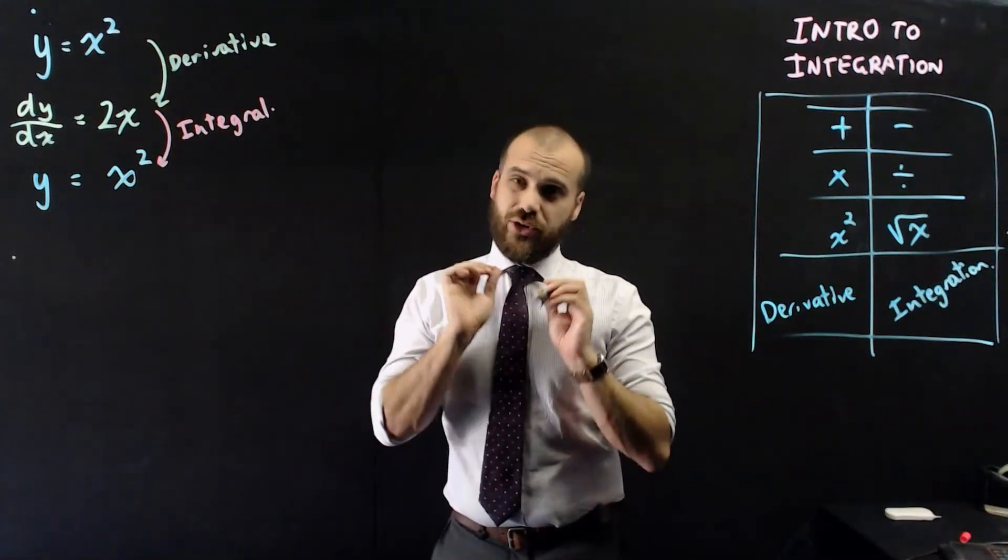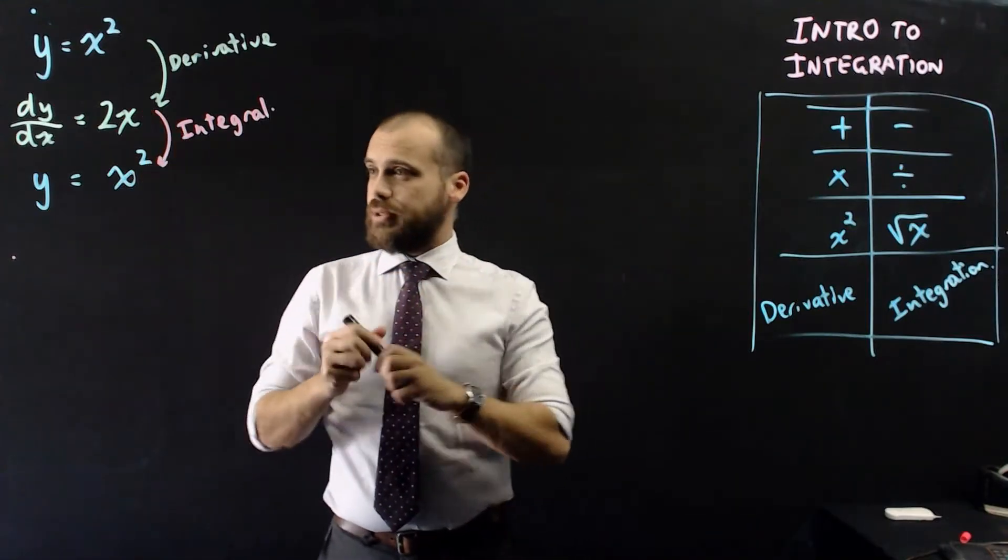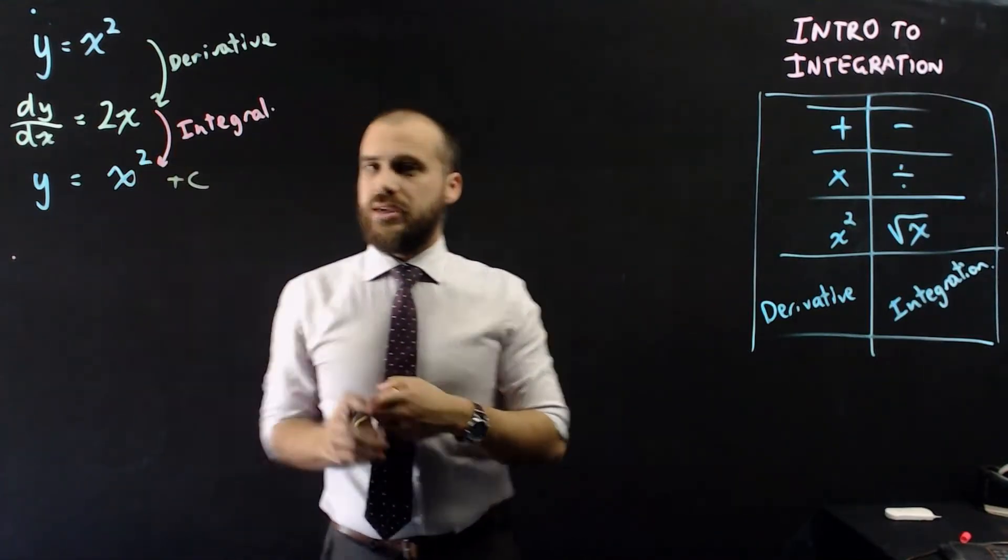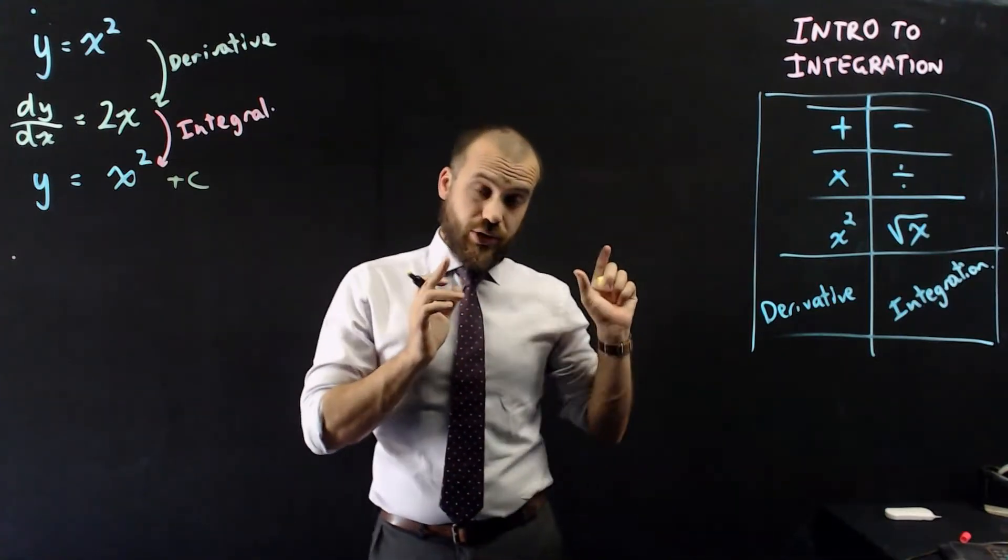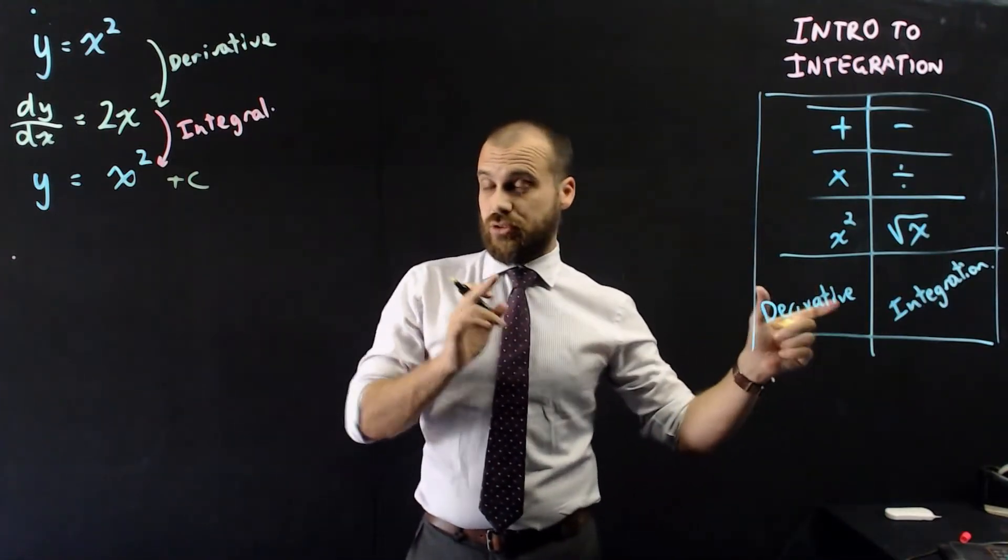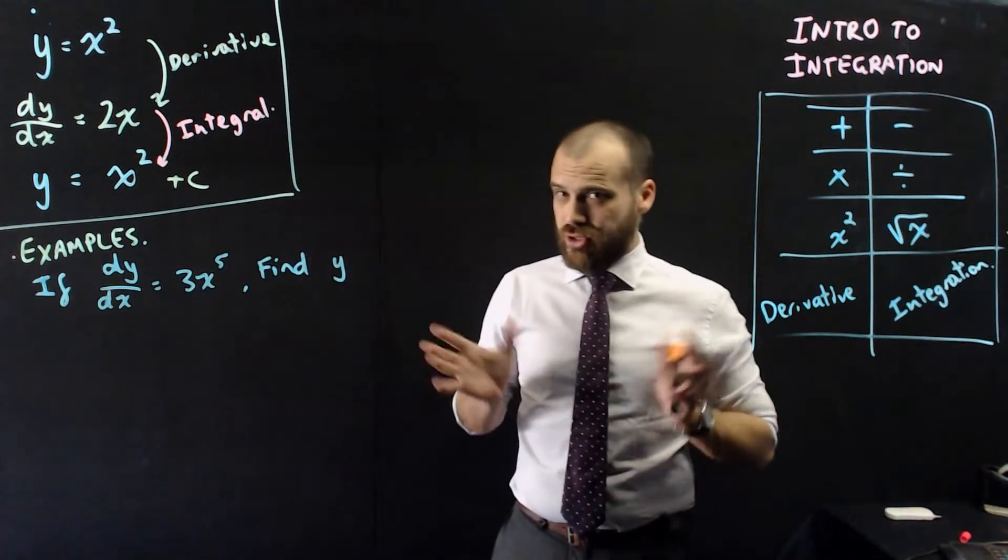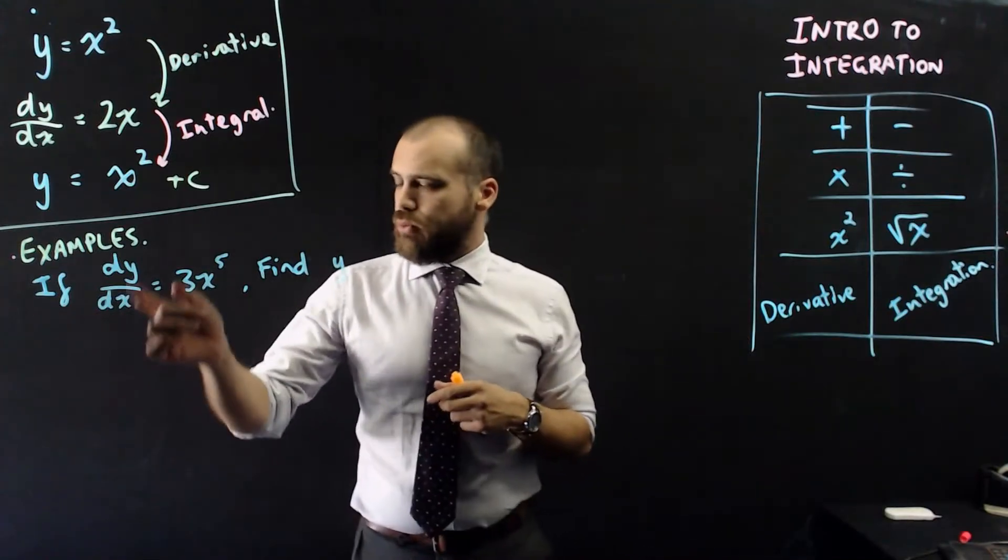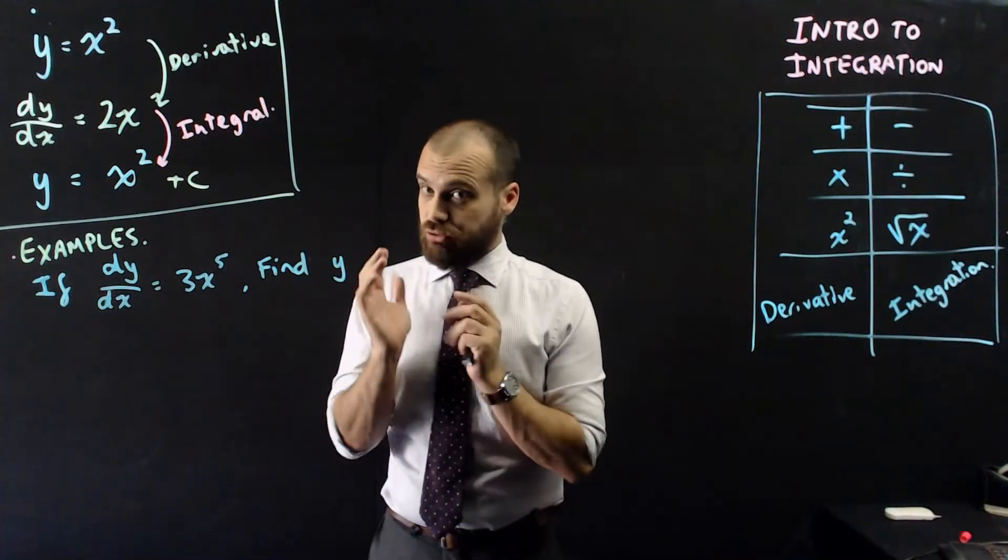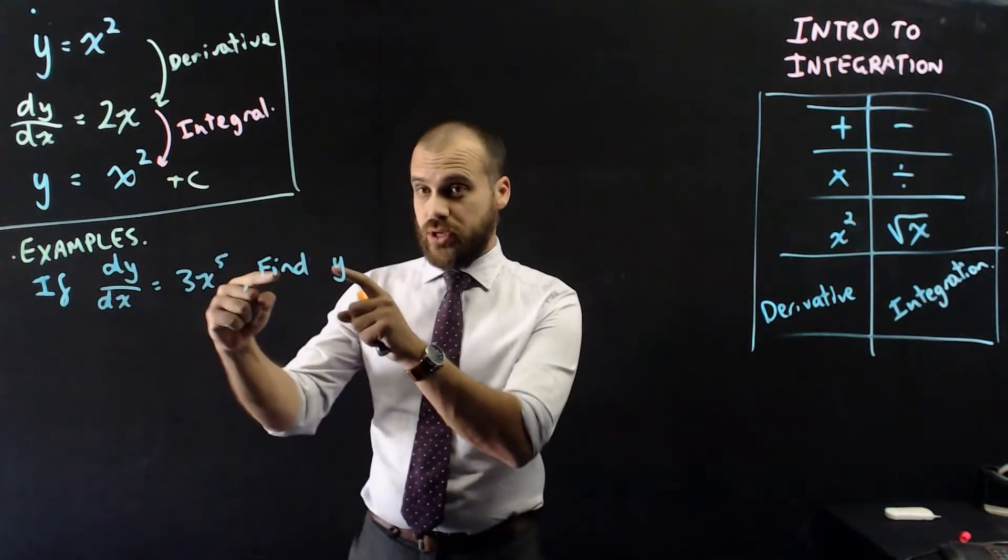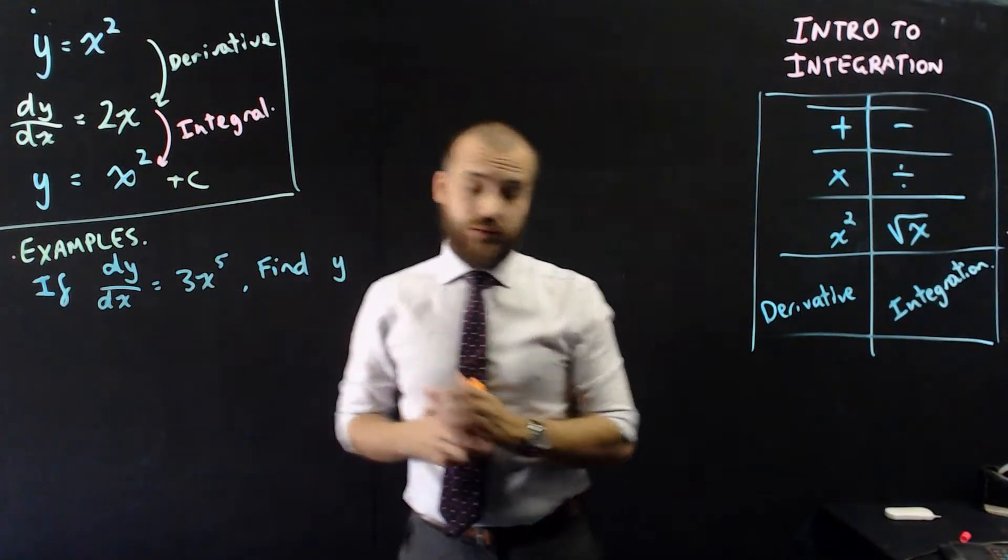Now, just so we don't get started on the wrong foot, when you do an integral, something very strange happens, you add this little plus c on the end. We'll talk about why in a minute. But for now, I just need you to understand that the opposite of derivative is integration, moving backwards and forwards there. Now, before I show you a formula for it, I think you can work it out yourself. If dy dx equals 3x to the 5, find y. Pause the video and try to find out what y was by doing integration. What was derived to make 3x to the 5?